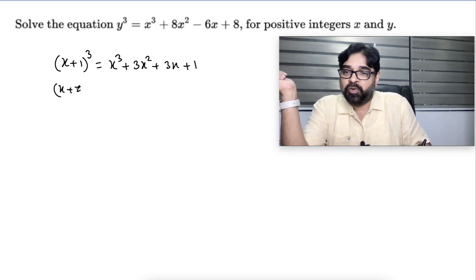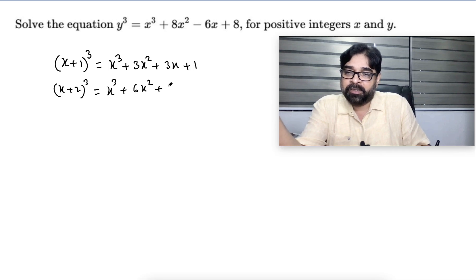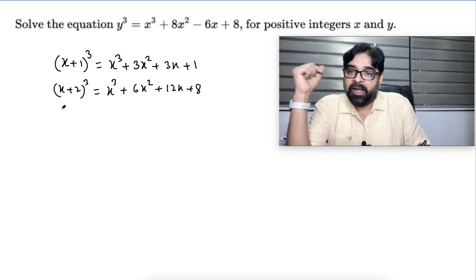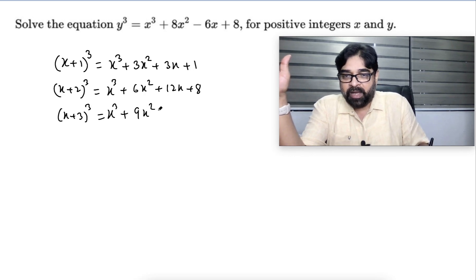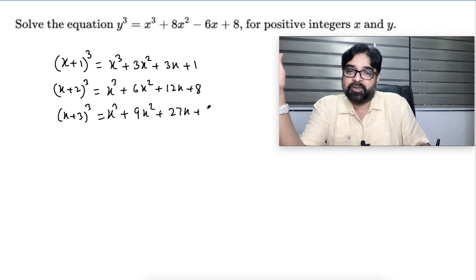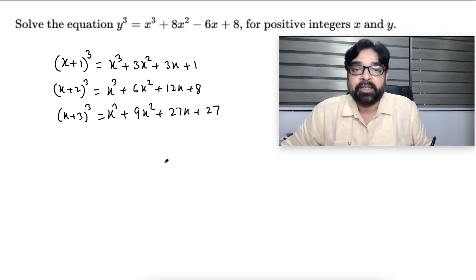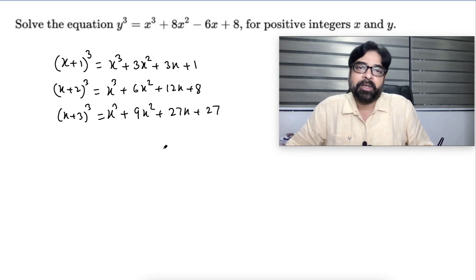And x plus 2 whole cube equals x³ plus 6x² plus 12x plus 8. And x plus 3 whole cube equals x³ plus 9x² plus 27x plus 27. What I'm trying to do is write y³ in terms of something cubed, so I can apply the a³ minus b³ formula and make things easier.